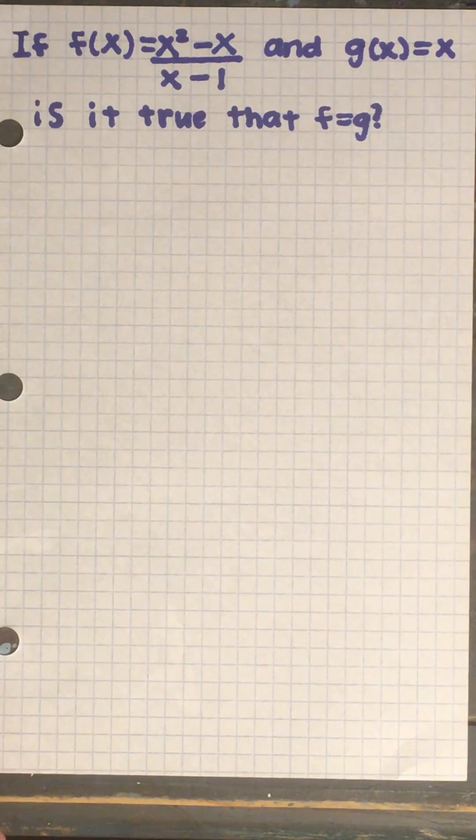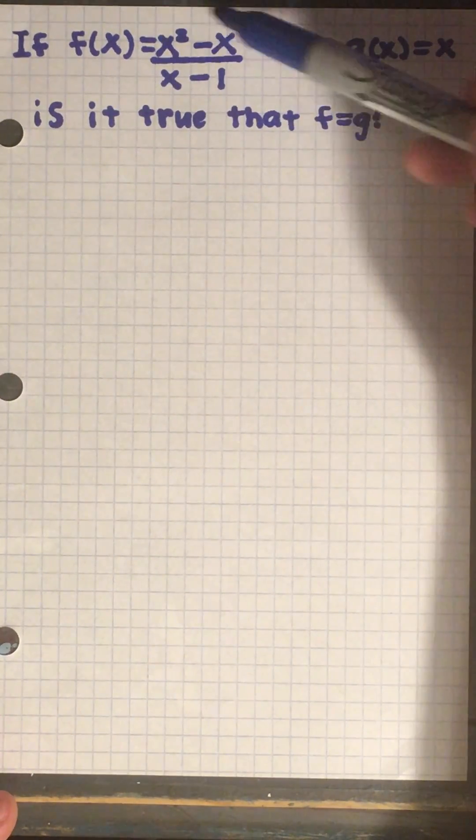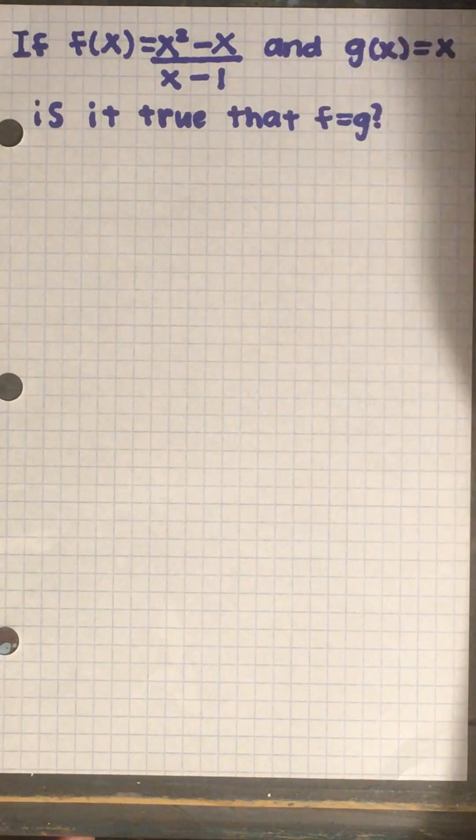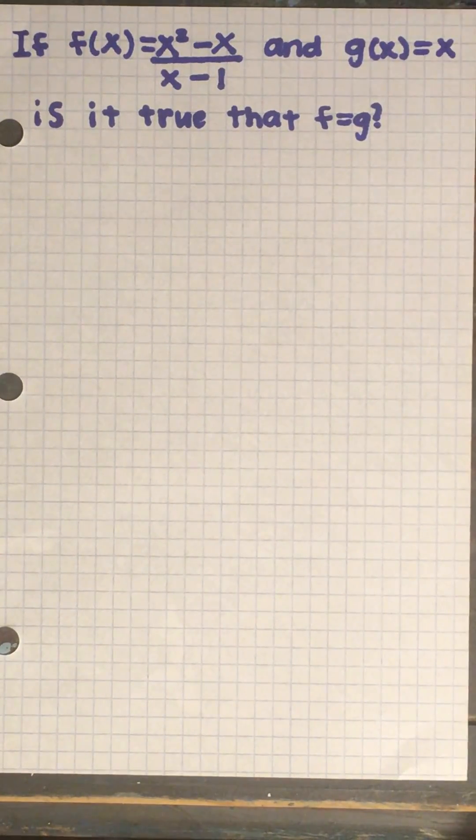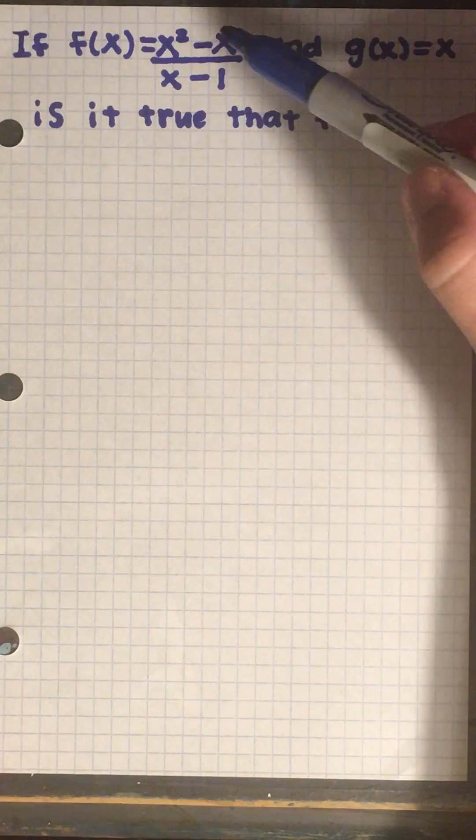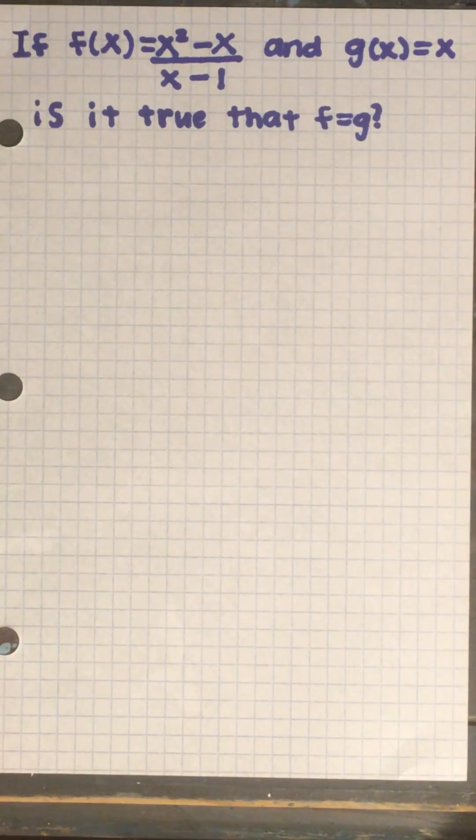What we want to do is simplify our f of x to get it in the form of g of x. We want to be able to simplify this all the way down to x.